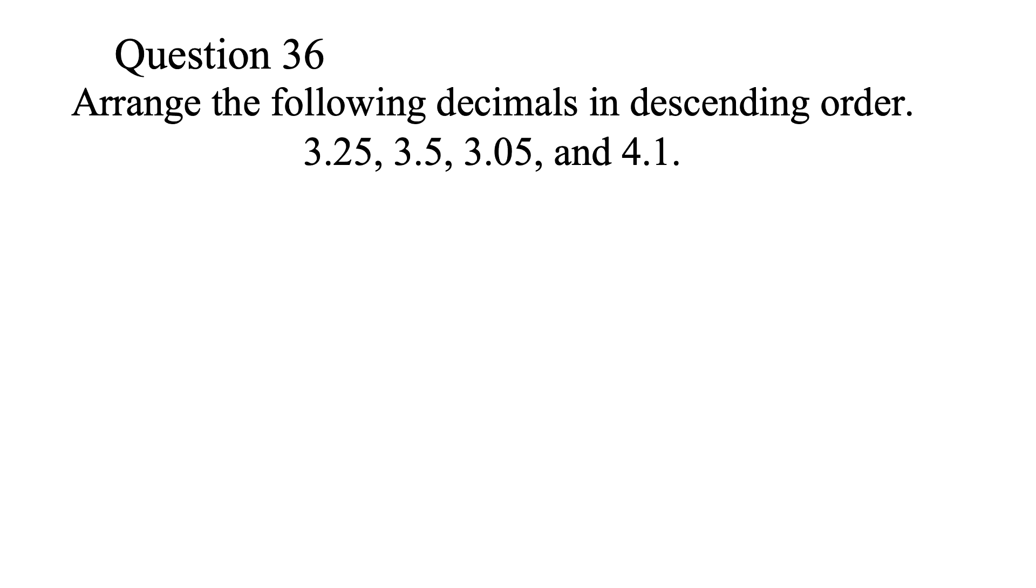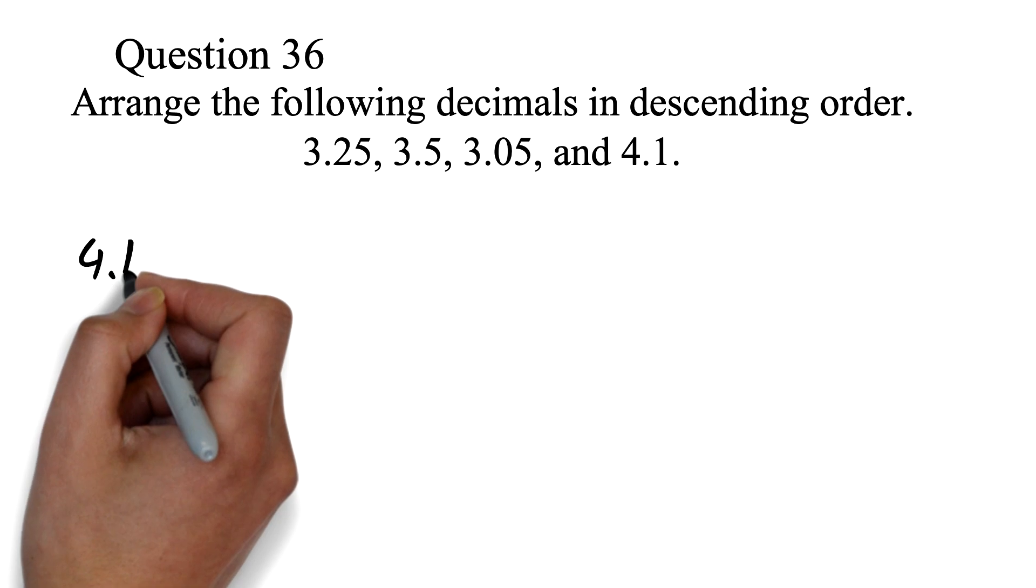Question 36. Arrange the following decimals in descending order: 3.25, 3.5, 3.05 and 4.1. Here, we are supposed to arrange from biggest to smallest. We see that the first three numbers are three point something, but the last number is 4.1. Since 4 is bigger than 3, the 4.1 will be the largest. Most students get this part right.